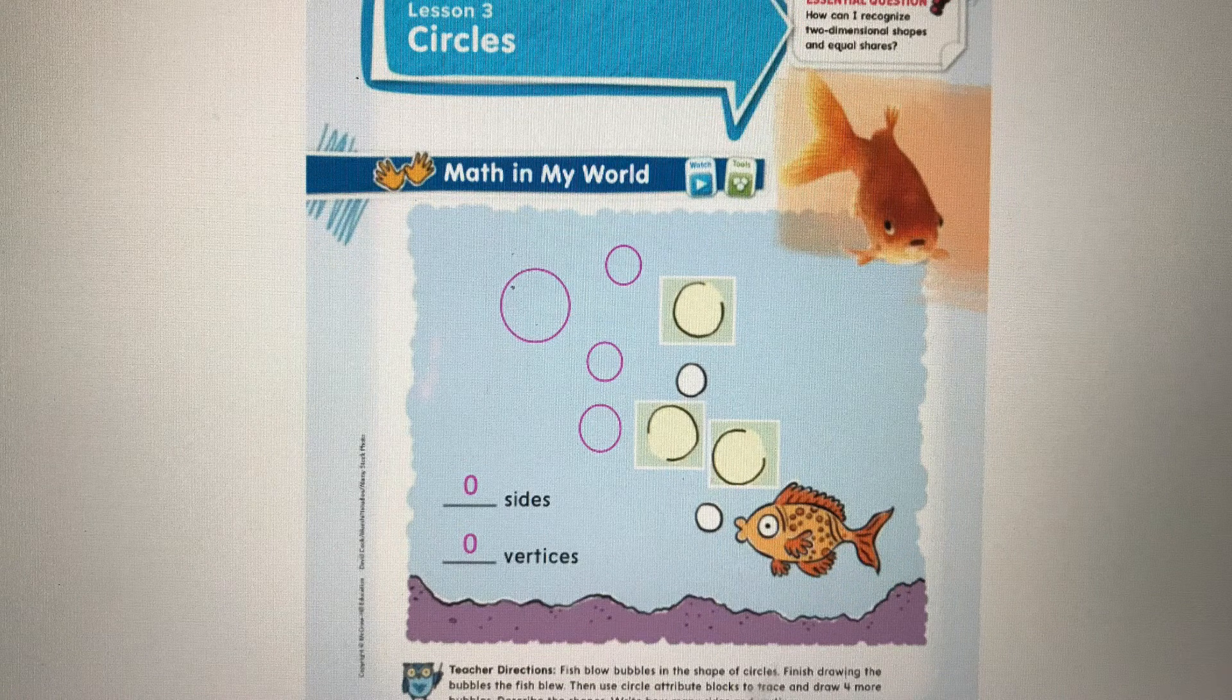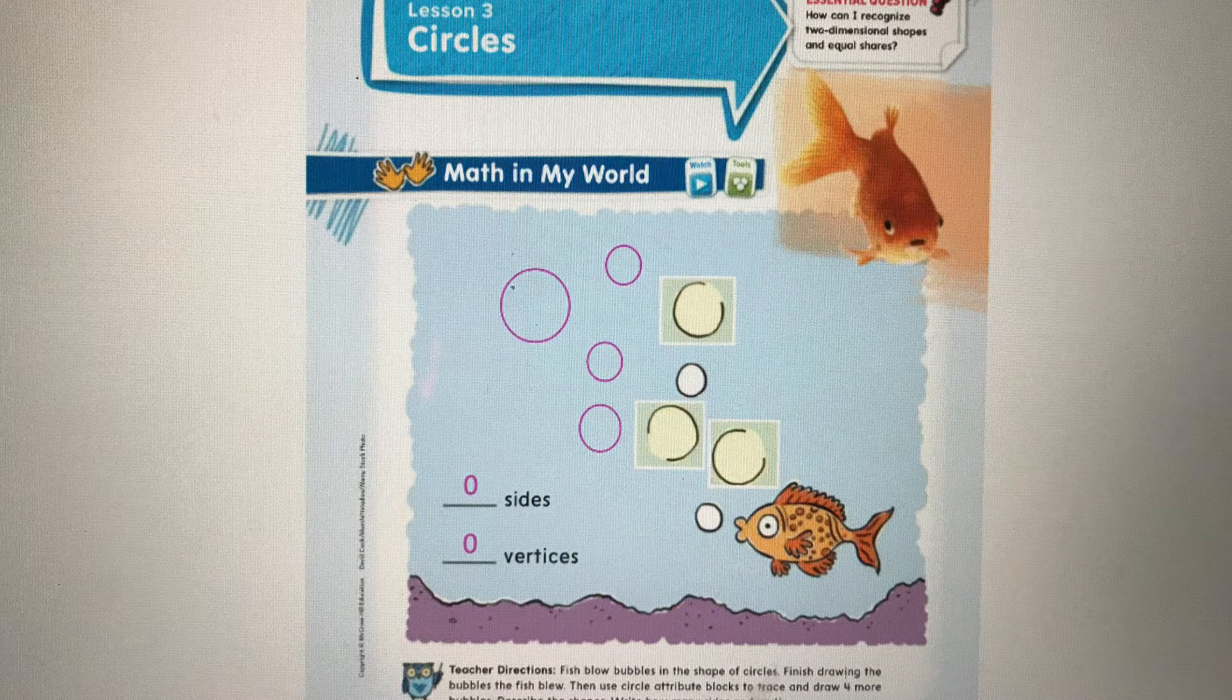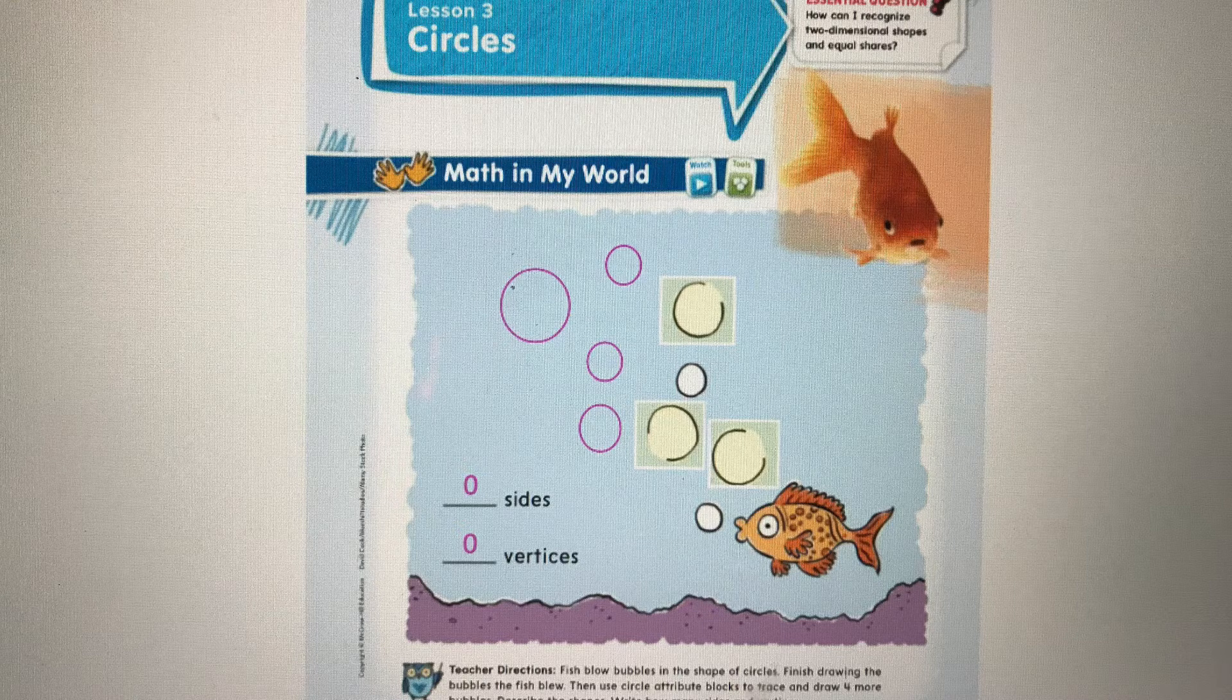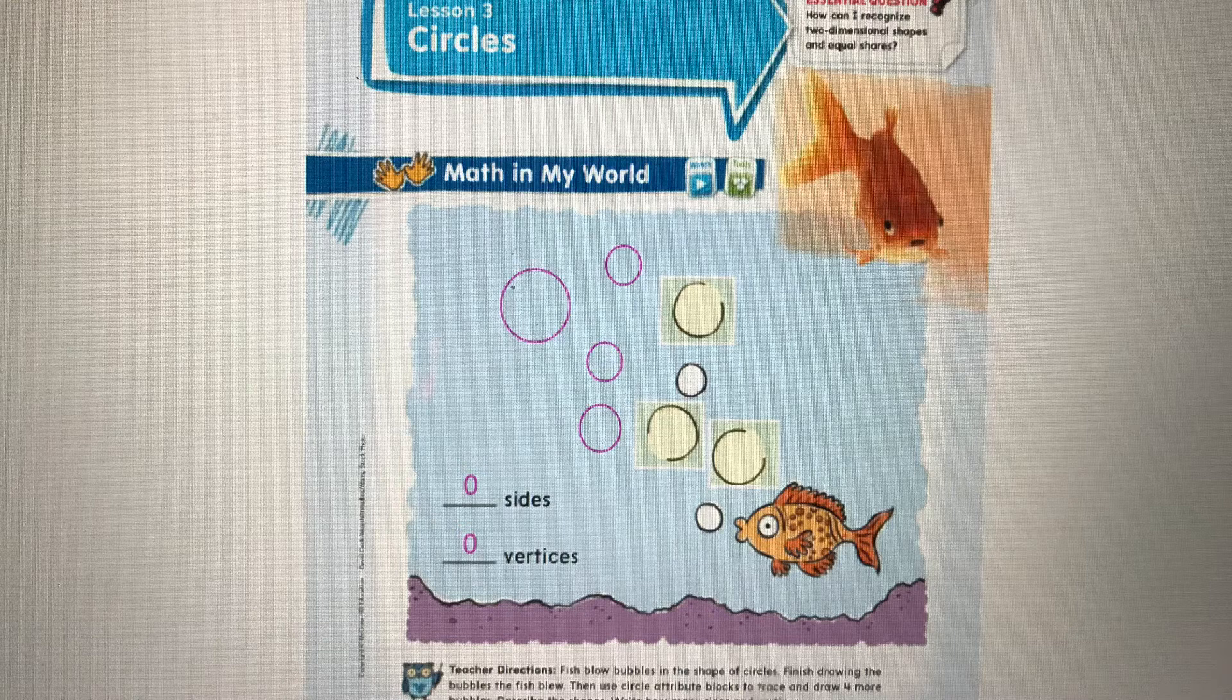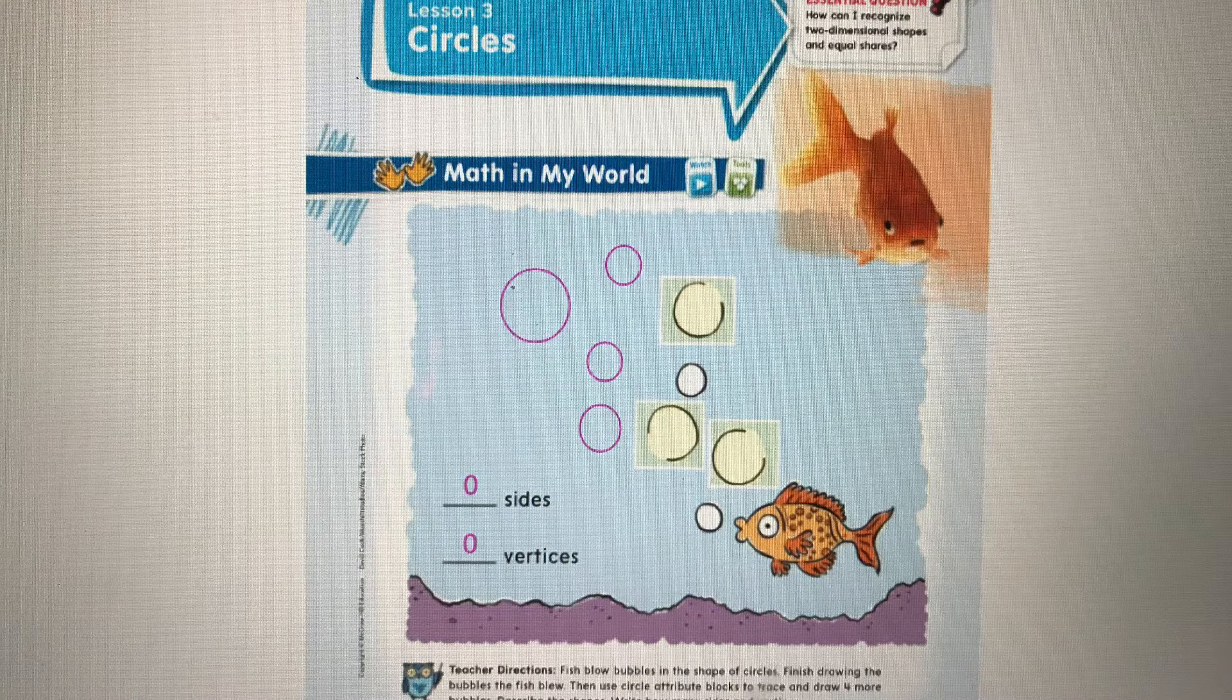Do you see the boxes around the three bubbles that were already on the paper? Those are the three shapes that you should close by drawing a line to make the circle. Then you can draw four more bubbles. It doesn't matter the size on your paper. So you should have a total of nine bubbles on your picture. A circle has no sides and no vertices. So put the number zero on the line.